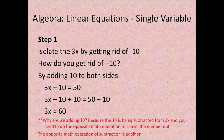So 3x minus 10 equals 50. Then you're going to add the 10, so you rewrite it as 3x minus 10 plus 10 equals 50 plus 10. Then you subtract the 10 from both sides and you get 3x equals 60.